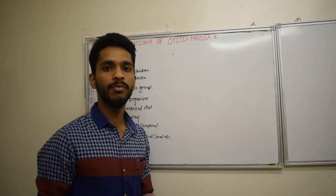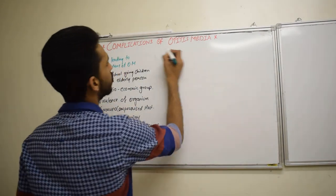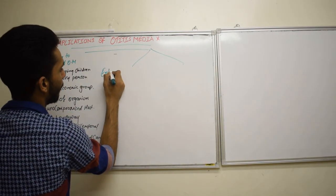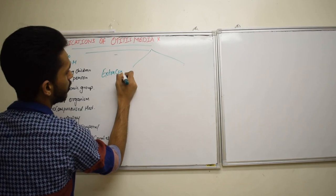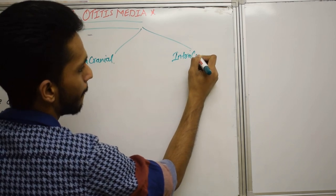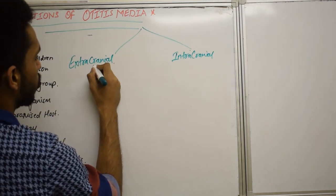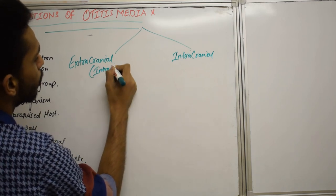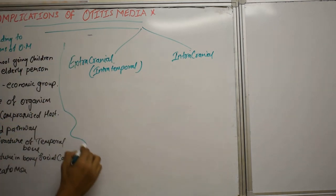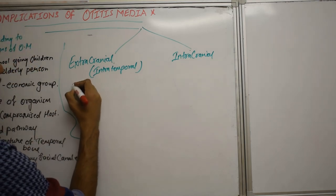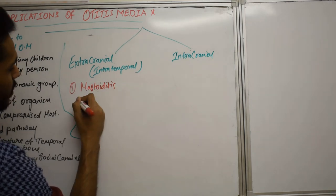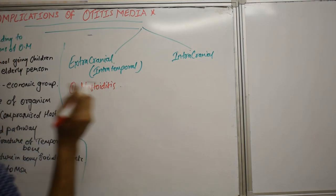Now let's list some of the complications of otitis media. They are divided into two groups: extracranial complications and intracranial complications. Extracranial complications are also called intratemporal complications.